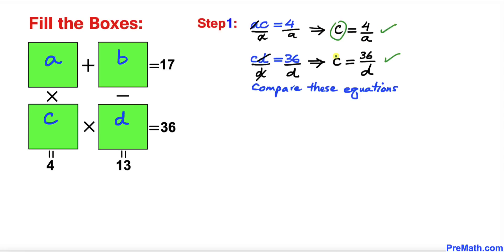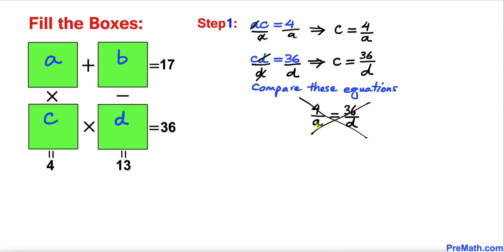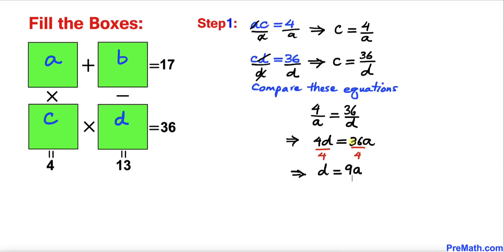Comparing these two equations, the left-hand sides are the same, so we can equate the right-hand sides: 4 divided by A equals 36 divided by D. Cross multiplying gives us 4D equals 36A. Dividing both sides by 4, our D value is 9A.